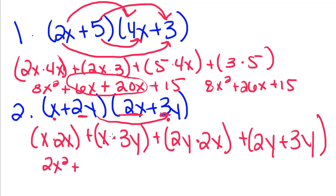Plus 2y times 2x is just 4yx, plus 2y times 3y, 6y squared.